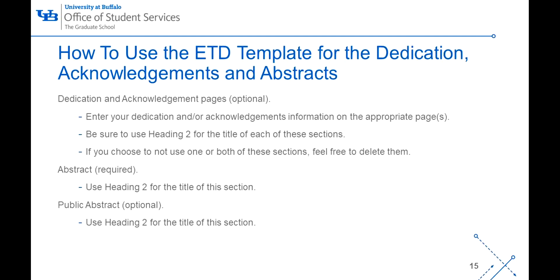The dedication and acknowledgement pages are optional. If you choose to have one or both of these pages, enter the information on the appropriate page or pages. Use Heading 2 for the title of each of these sections. If you do not want to include one or both of these sections, feel free to delete them. The abstract section is required in your document — this should be a succinct and concise narrative description of your work. The public abstract is not required, but encouraged. Heading 2 should be used for the abstract section.